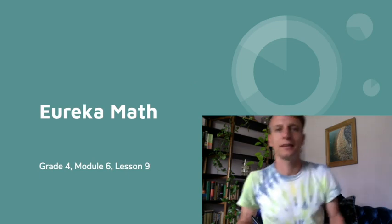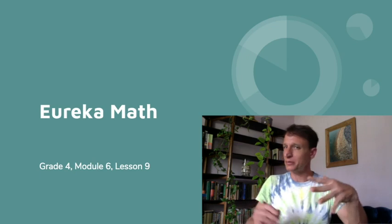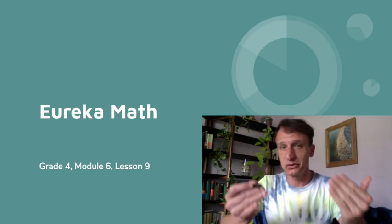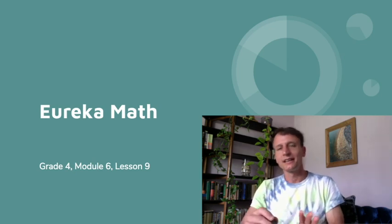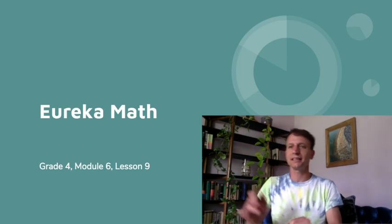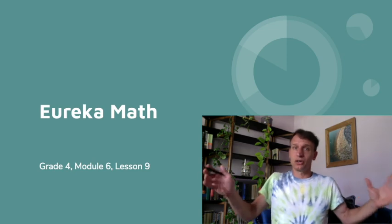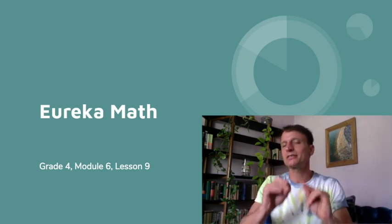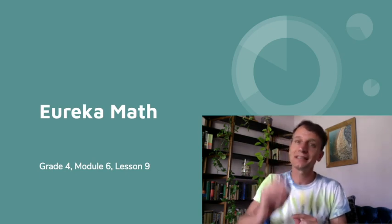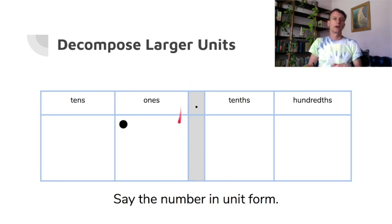It's lesson time! This is lesson nine, and this is where things start to step up a bit. We're starting to compare decimals. Today's comparison lesson is a tad bit easier than what we'll look at later — ordering decimals in tenths and hundredths, proper, improper, and mixed number fractions, all together. We're going to use the place value chart, metric measurement, and compare decimals.